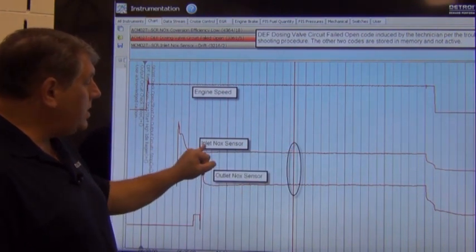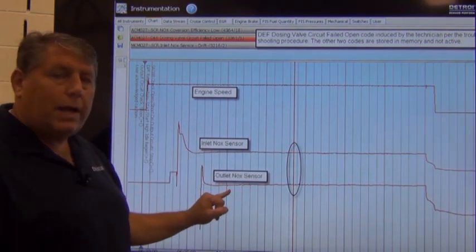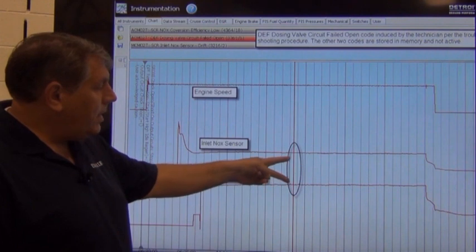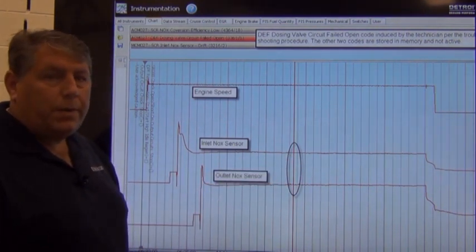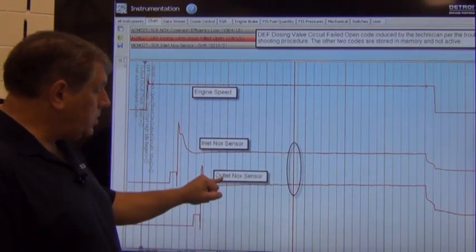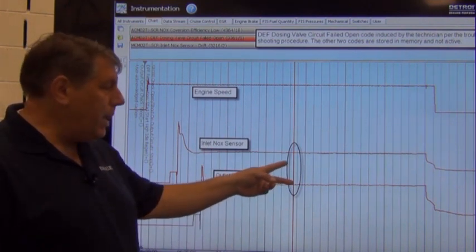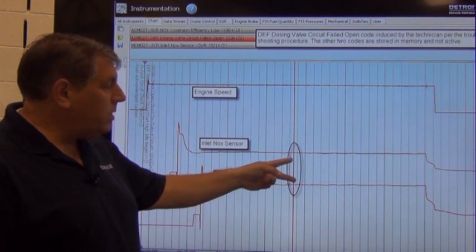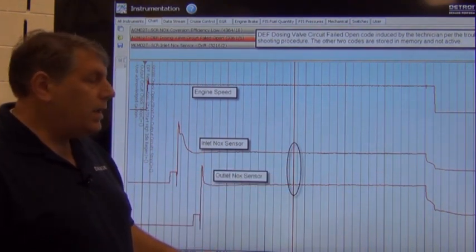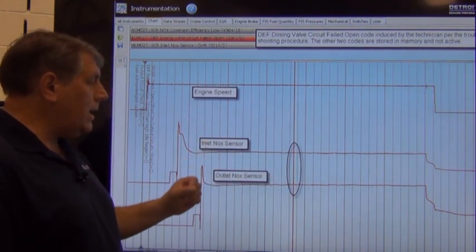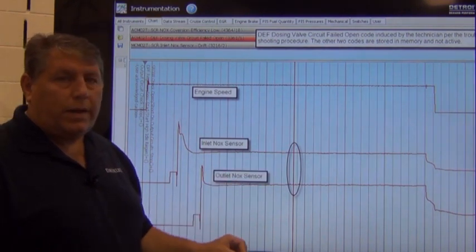Once you run the test, you're going to compare your SCR inlet NOx sensor and your outlet NOx sensor. If they are not within 50 parts per million, then the first item you're going to want to do is replace your outlet NOx sensor, rerun your low temp ATD and compare them again. If they are still not within 50 parts per million, then you're going to replace your inlet NOx sensor and again rerun the test.